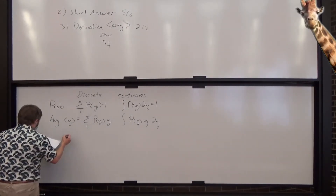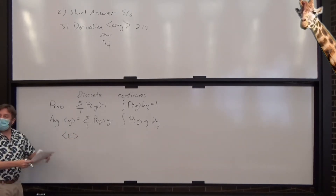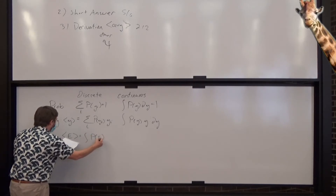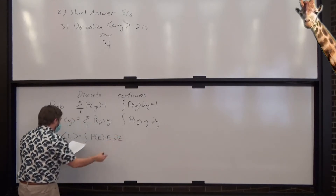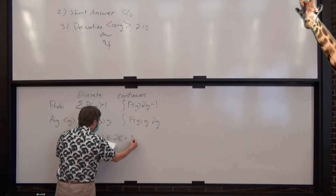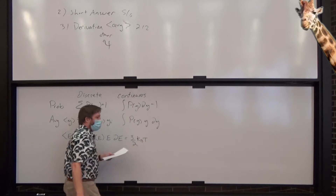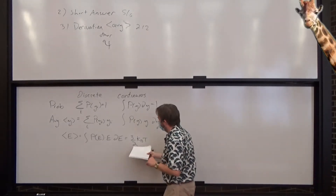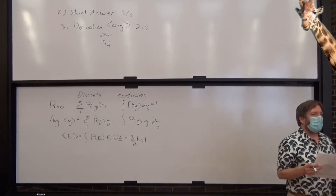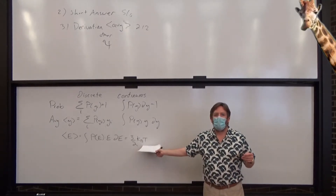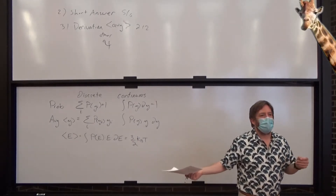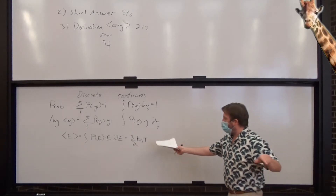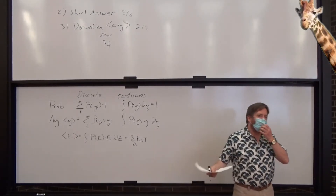Let's do average energy. Notice this is the same symbol for expectation value in quantum — there's a reason for that. The probability that something has a certain energy times the energy, with partial derivatives because integrals require partials, gives you average energy. For a gas it turns out to be 3/2 k_B T. Notice that's one molecule's energy. Some versions use R (8.314) instead of k_B — remember, k_B is R divided by Avogadro's number, the gas constant for a single molecule.